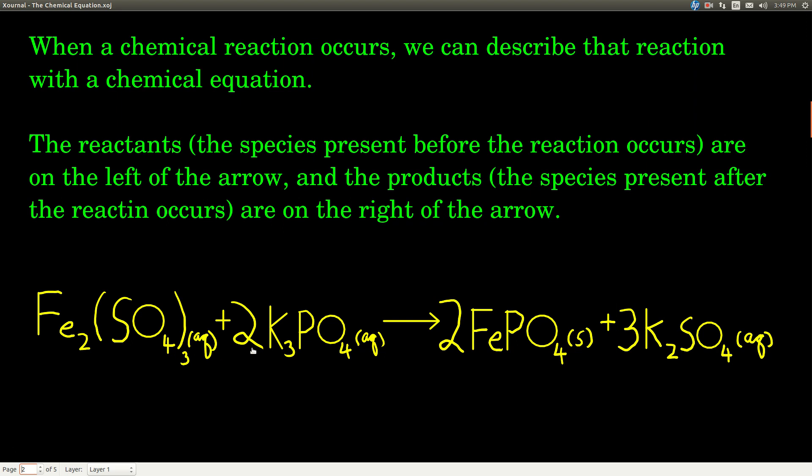And there's always, in a chemical equation, something like this down here. And there's always an arrow. And everything that's written to the left of that arrow is what we call a reactant. Reactants are the species that are there before the reaction happens. They're what's coming together to make the reaction happen.